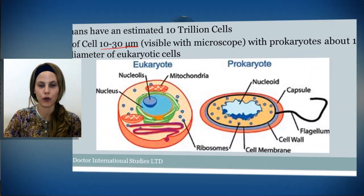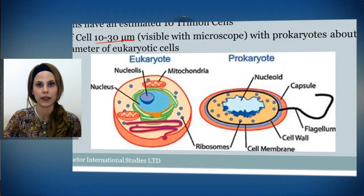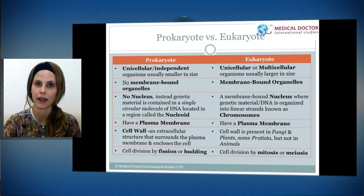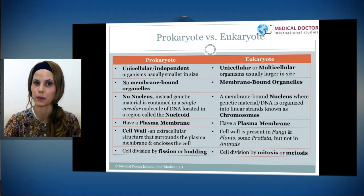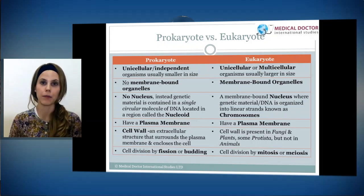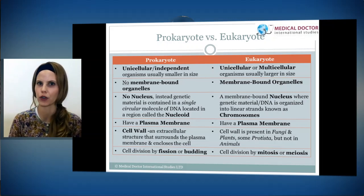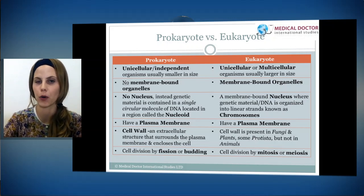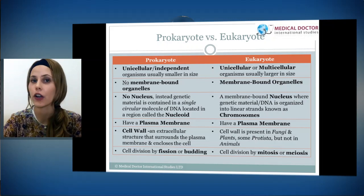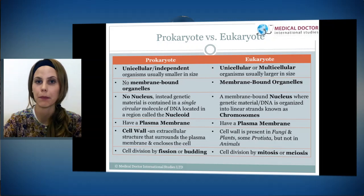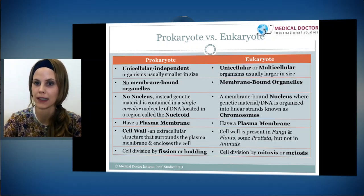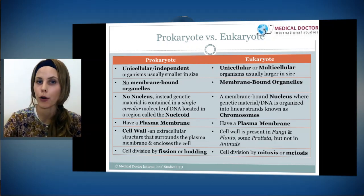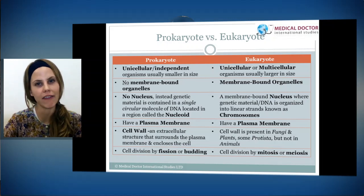Down here you can see a picture of a eukaryote and a prokaryote, and now we're going to talk about the differences between these two cells. I recommend you write down this chart because it's one you will look back to. Prokaryotes are unicellular, independent organisms, usually very small in size — bacteria, for example, are composed of only one cell. However, eukaryotes can be unicellular or multicellular, and are usually larger in size. Human beings are multicellular, however some protists, which are also eukaryotes, can be unicellular. Prokaryotes have no membrane-bound organelles, while eukaryotes have membrane-bound organelles.